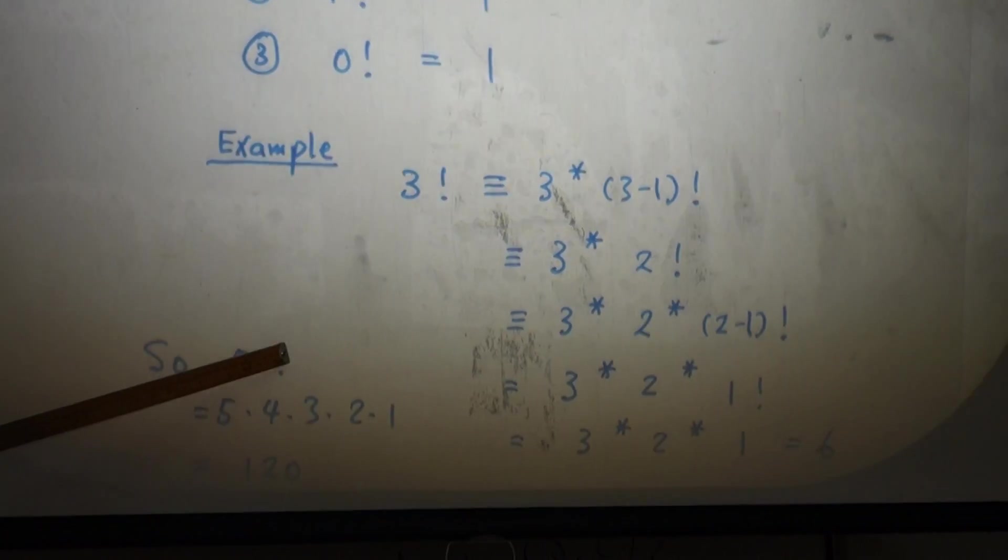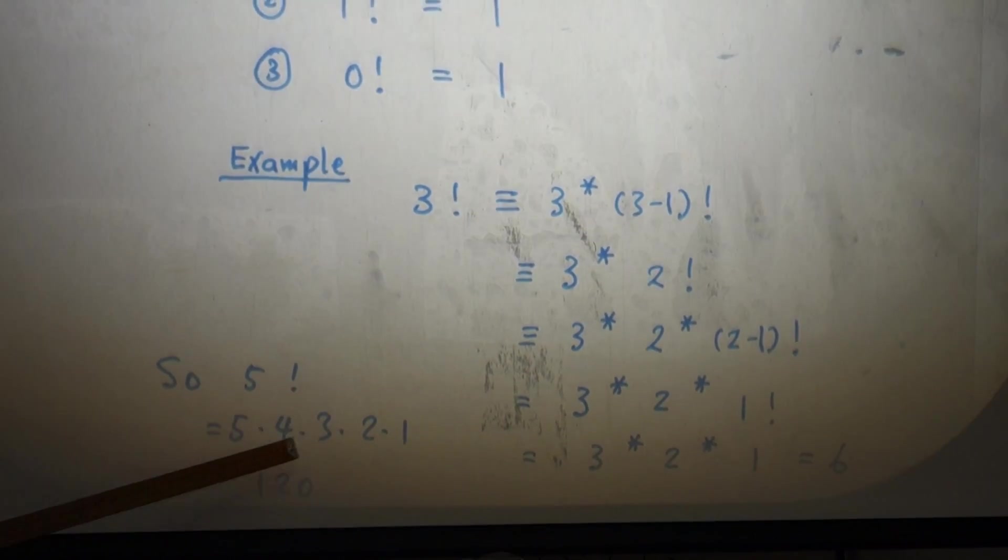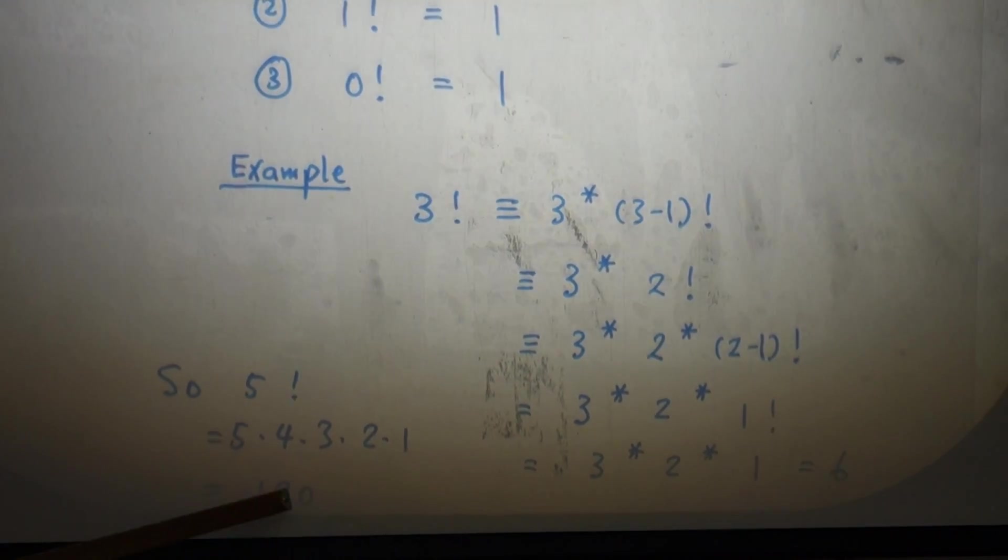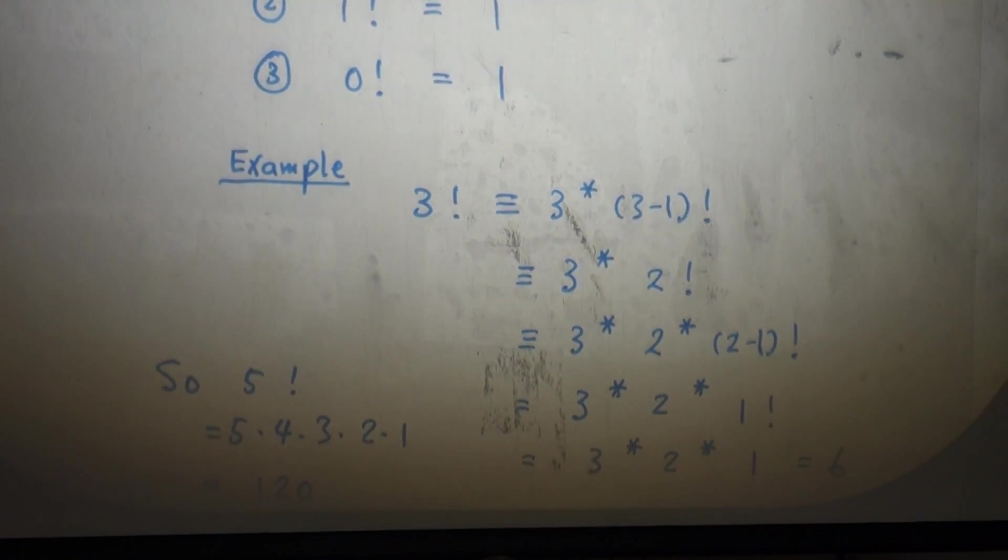Similarly, 5 factorial - you find 5! is 5 times 4 times 3 times 2 times 1, which is 120. You want a copy? Go ahead.